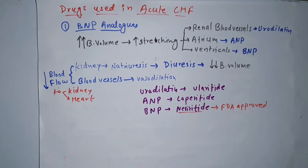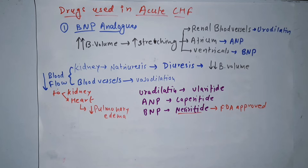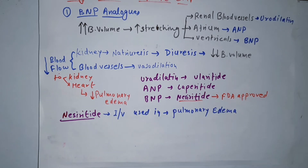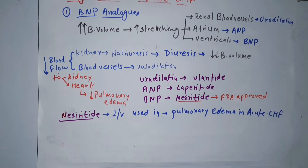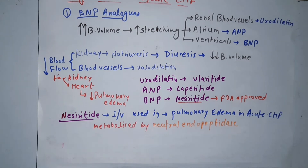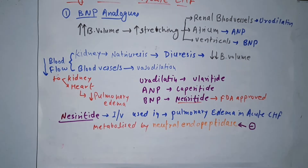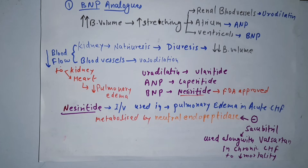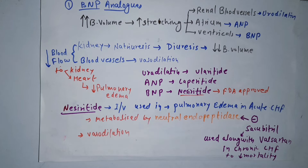Just like BNP, these drugs decrease the blood flow to the heart and kidney, causing a decrease in pulmonary edema. Nesiritide is always given intravenously because they are peptides and cannot be given orally. It is used in pulmonary edema caused by acute CHF. These drugs are metabolized by the enzyme neutral endopeptidase, which is inhibited by sacubitril. Sacubitril is used along with valsartan in chronic CHF to decrease mortality.